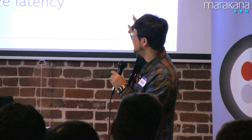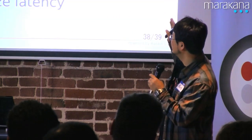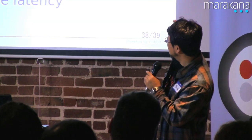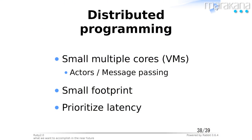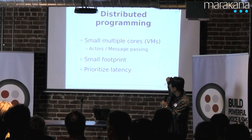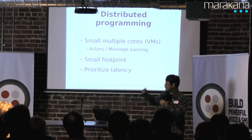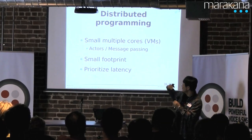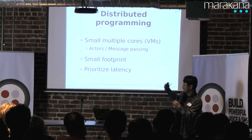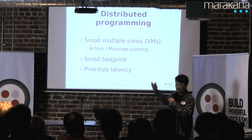Distributed programming also runs better with this kind of lightweight Ruby — assigning small virtual machines to multiple cores communicating via message passing, like actors. An implementation with a small footprint and latency priority is better suited for this kind of environment.